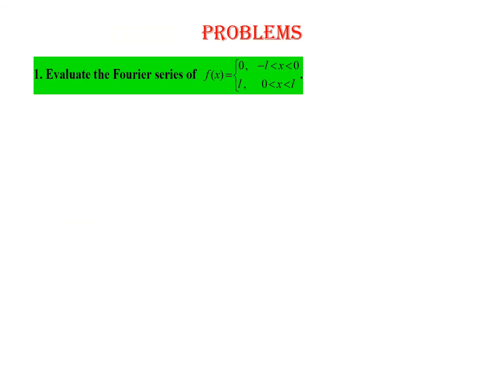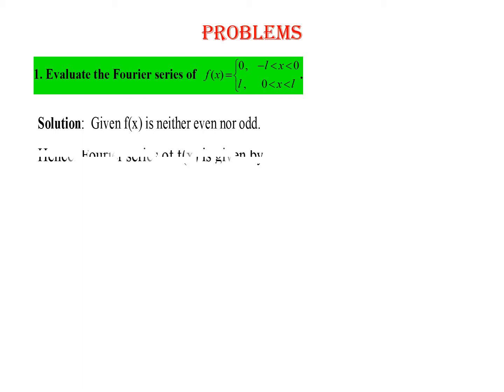Now let us start doing problems of this type. Look at the first one: evaluate the Fourier series for the function defined as 0 on (−L, 0) and L on (0, L). Observing this function, it is neither an even function nor an odd function.